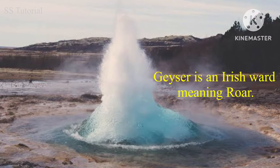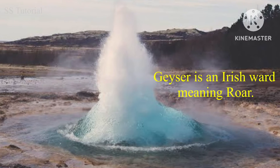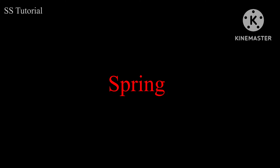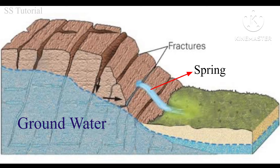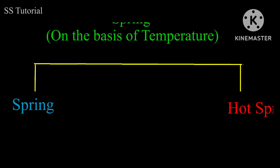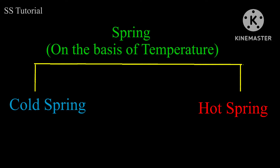Geyser is an Irish word which means 'roar', as it is erupted loudly. Before discussing about geyser, we must know about spring. A spring is nothing but a natural flow of groundwater onto the earth from an opening of the earth's surface due to higher pressure. Spring can be divided into two types based on the temperature of the outcoming water.